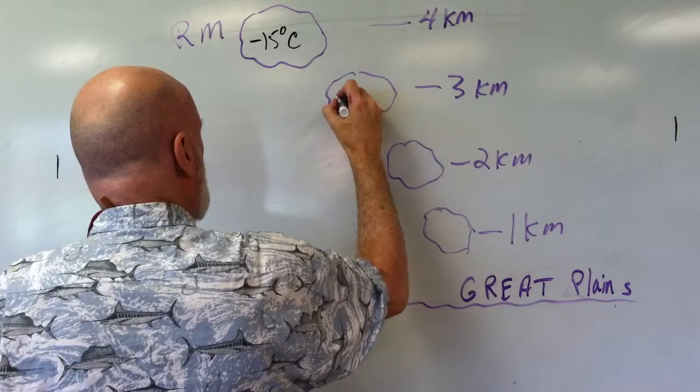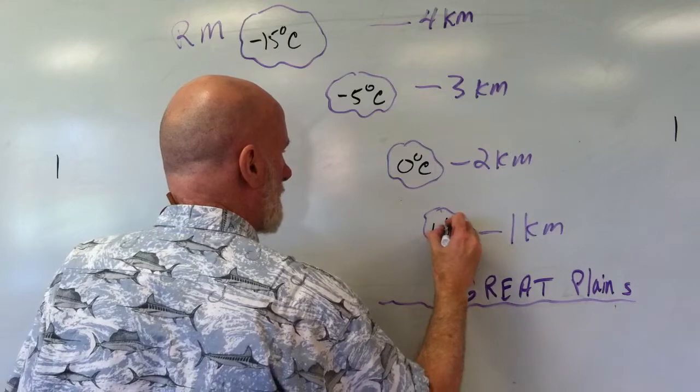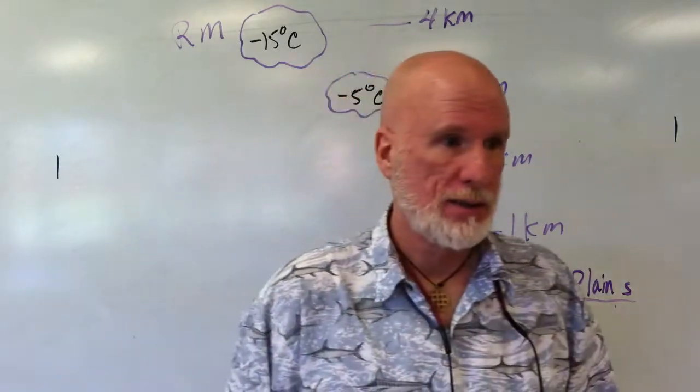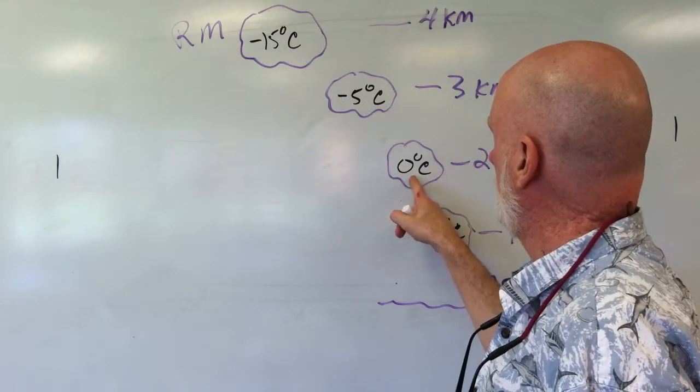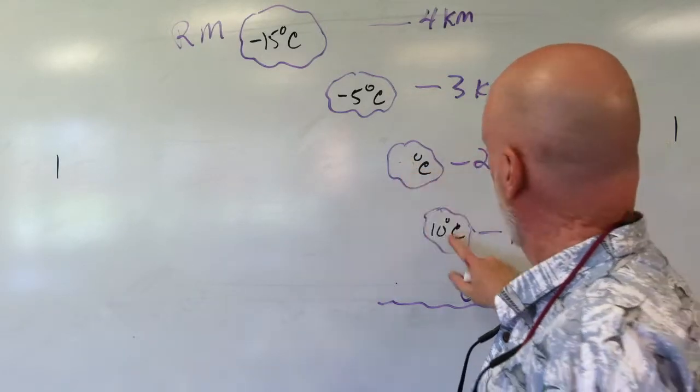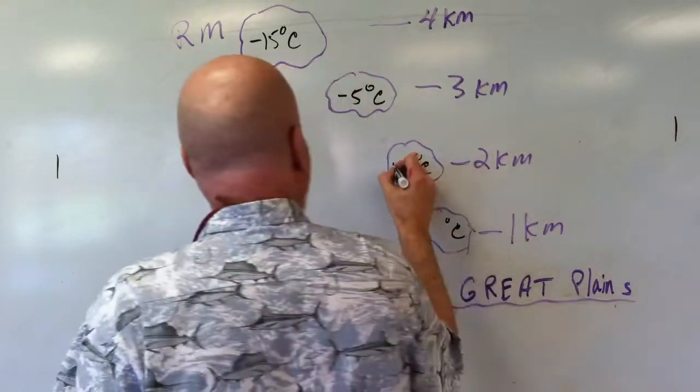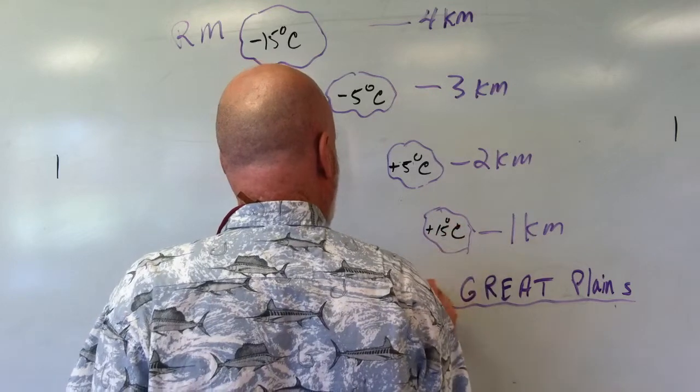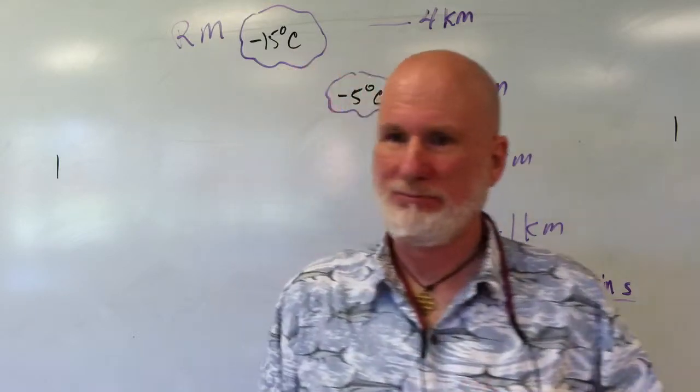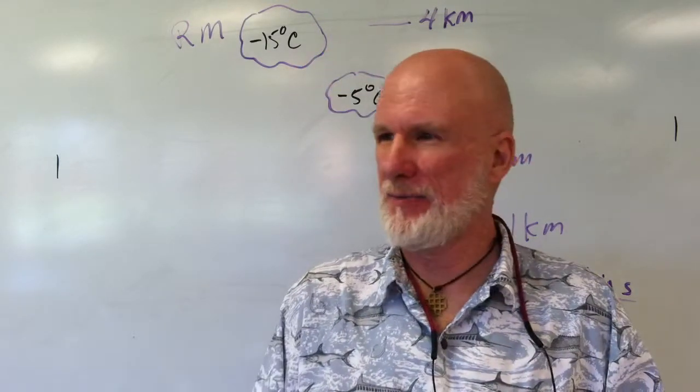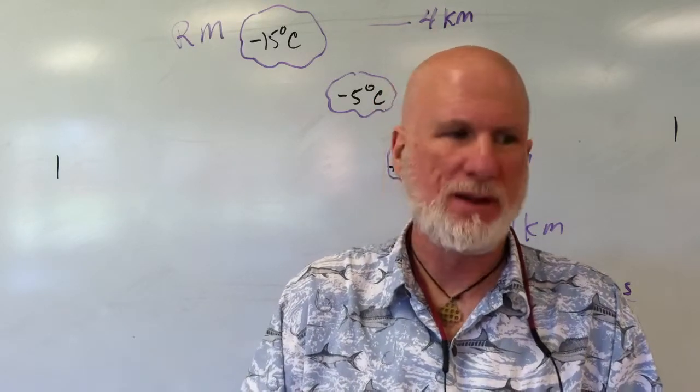So this is going to be negative 5 degrees Celsius. This will be 0 degrees Celsius. This will be 10 degrees Celsius. Did I make a mistake? Yes. Negative 5. 5. Thank you. I knew I was wrong here somewhere. So what's that positive 5, right? It's positive 5, positive 15, and then positive 25 on the ground, right? Positive 25 is pretty nice. Pretty nice temperature. What do you think that is, about 75, 72, somewhere in the 70s. It's pretty nice. Nice temperature.